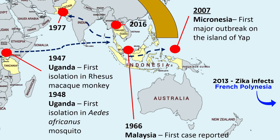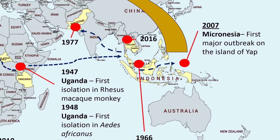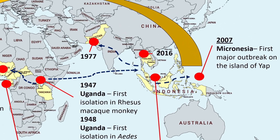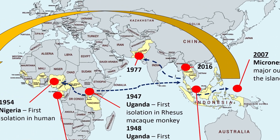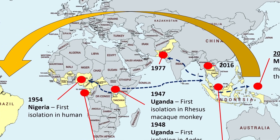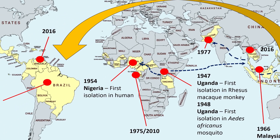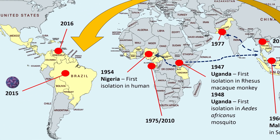In 2013, Zika spread through French Polynesia, infecting about 11% of the population, then to other islands in Oceania. Then, in 2016, the World Health Organization declared a public health emergency of international concern when Zika infection was associated with clusters of neurological disorders in Brazil.